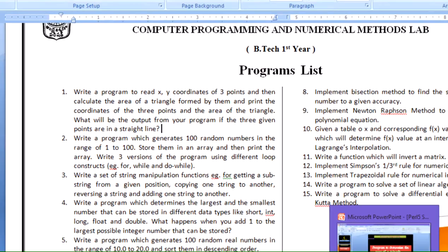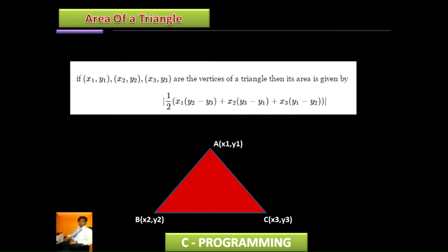Let us understand how to implement this. The basic formula — given the coordinates of triangle A, B, C as (x1, y1), (x2, y2), and (x3, y3) — is: area = half of x1*(y2 - y3) + x2*(y3 - y1) + x3*(y1 - y2).